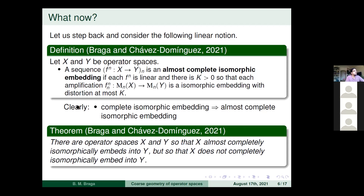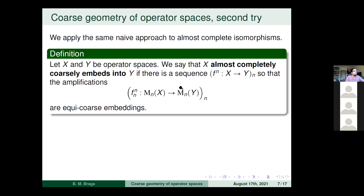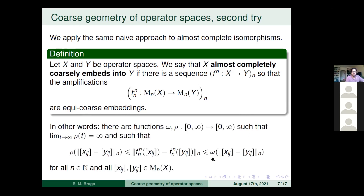Our plan is to write the natural coarse version of this: we say X almost completely coarsely embeds into Y if there exists a sequence of maps from X to Y such that the sequence of amplifications are equi-coarse embeddings. Unfolding the definitions: for each level n, the map f_n has moduli ω and ρ that do not depend on n, with ρ going to infinity as t goes to infinity.